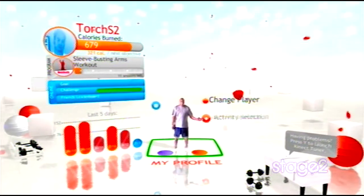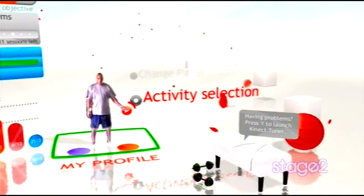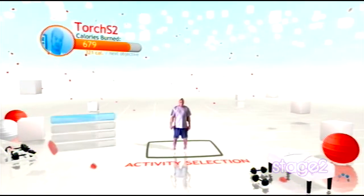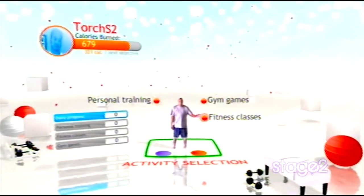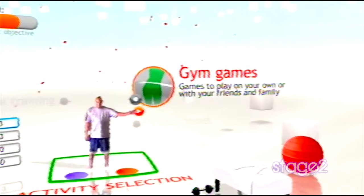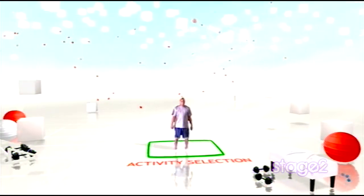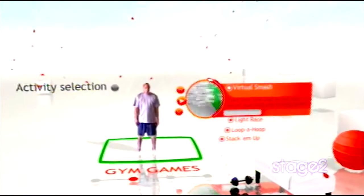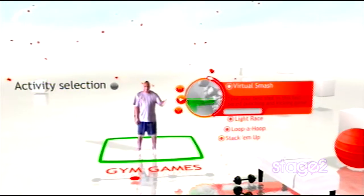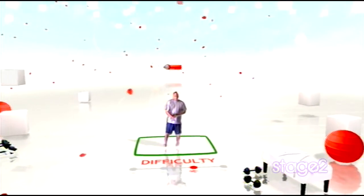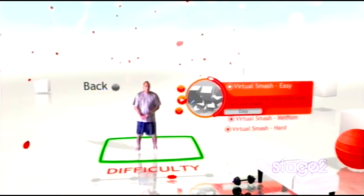I'm going to go ahead and go to Activity Selection. From there we're going to go to Gym Games, then we're going to select Virtual Smash. From here you can select the different difficulties that you want to play. Today we're going to play on Medium.